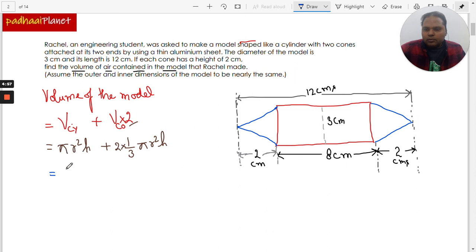Let's start putting up the values. I'm not going to put the value of π immediately. The radius - they're saying the diameter is 3 centimeters, so obviously the radius will be half of it, so we'll write (3/2)². The h for the cylinder is 8 centimeters, so this is 8 plus 2/3 multiplied by πr², that makes it (3/2)², and the h of the cone is 2 centimeters.